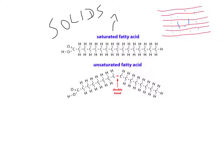Unsaturated fatty acids have at least one double bond, which causes a bend in the chain. Because they are bent, they cannot line up neatly together, forming fewer hydrogen bonds, which means they tend to be liquids at room temperature.